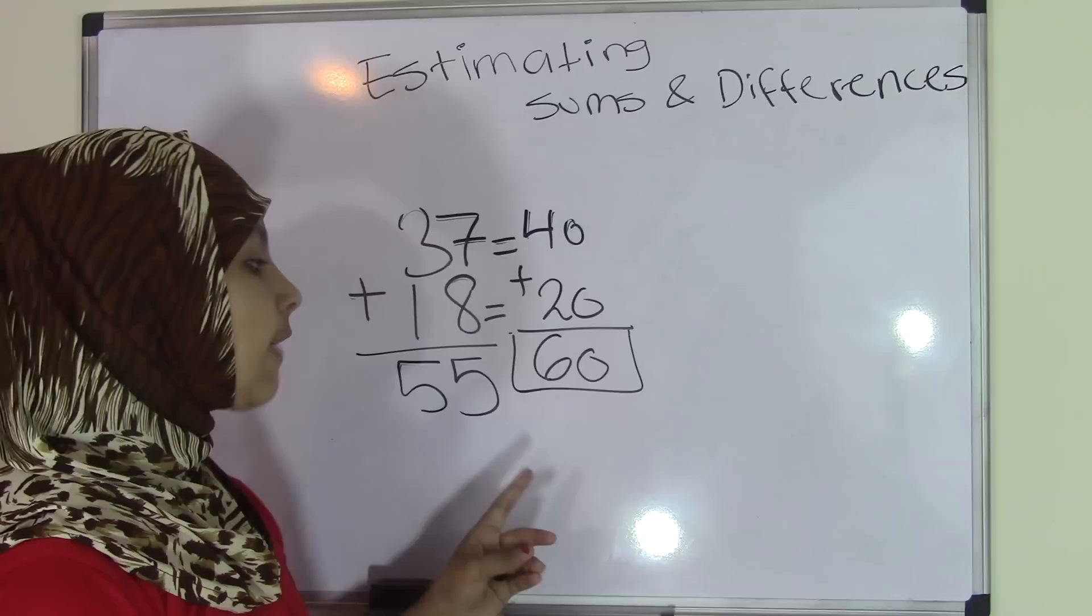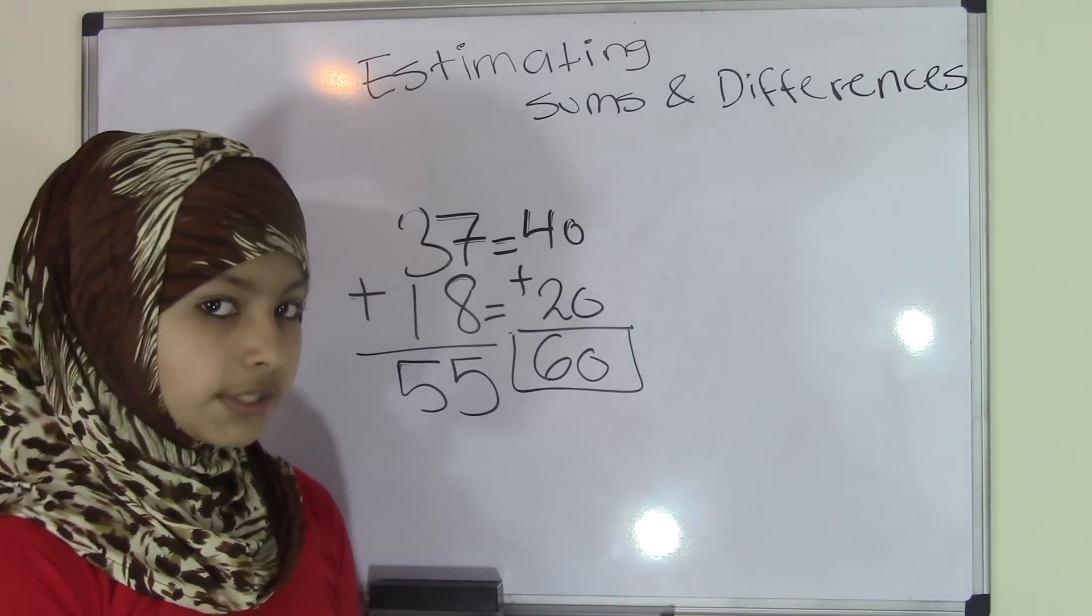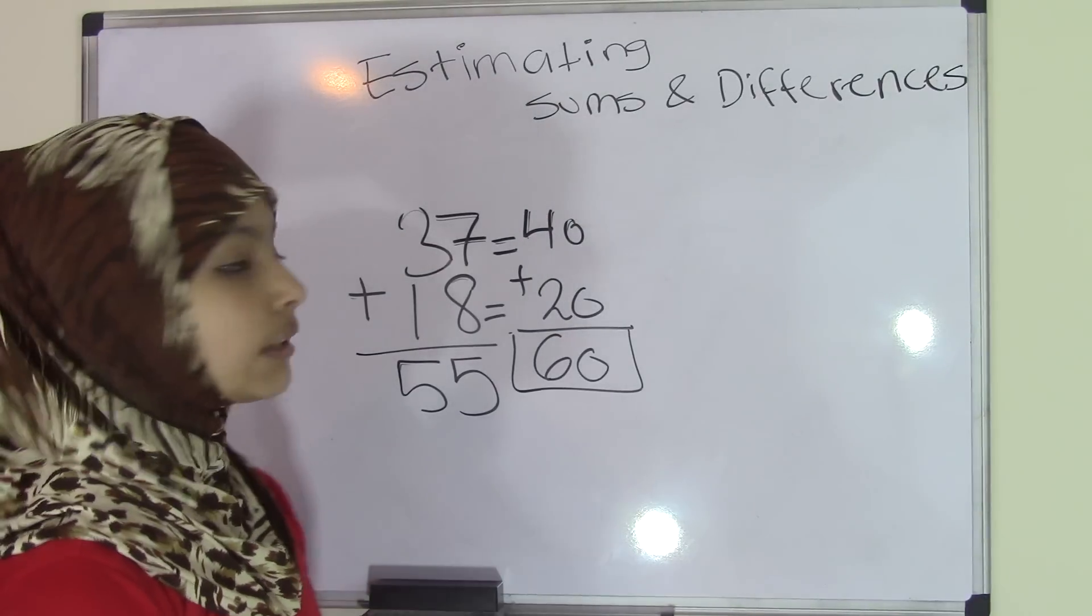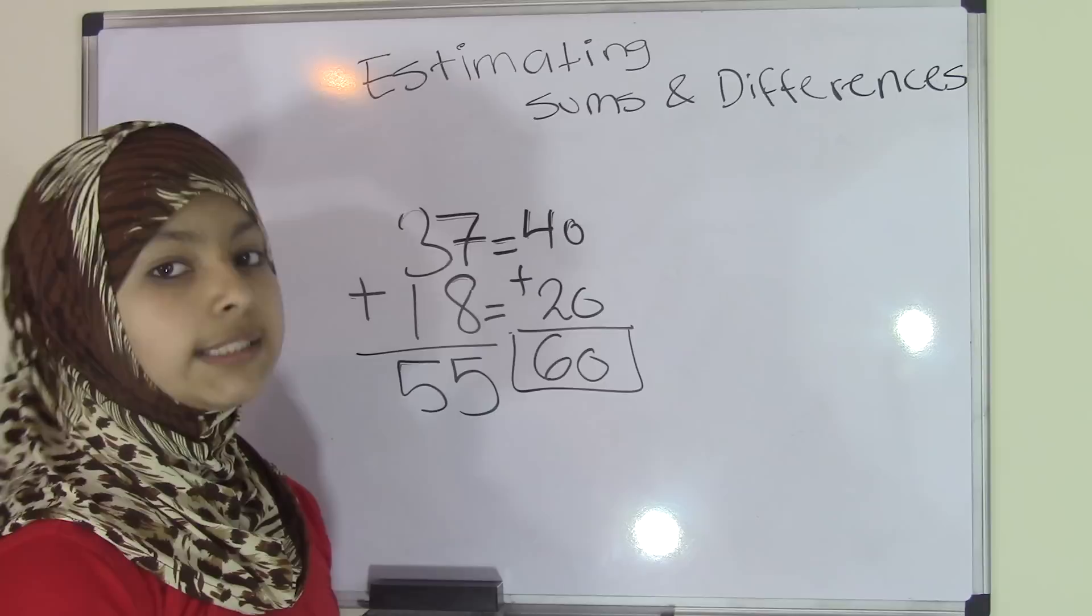We know that 55 and 60 are both reasonable numbers. Therefore, 60 is a reasonable estimate for 37 plus 18.